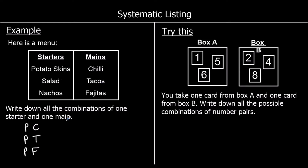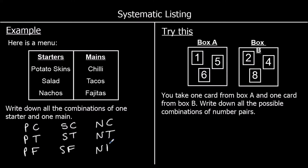We could get a salad for starter and we could get salad with chilli, salad with tacos, and salad with fajitas. Or we could get nachos for the starter with chilli, with tacos, and with fajitas. So there we've listed all of the possible combinations and we've done it systematically.